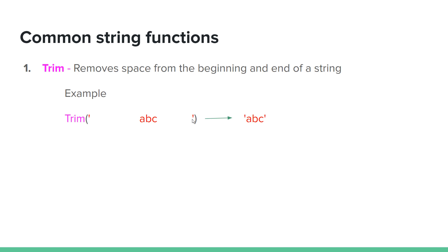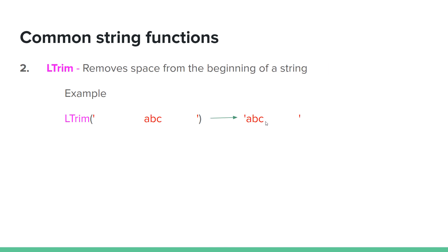You can remove space from the beginning of the string on the left side using LTRIM. For example: space, ABC, space — LTRIM removes the space from the left. The output will be ABC with space on the right side only.